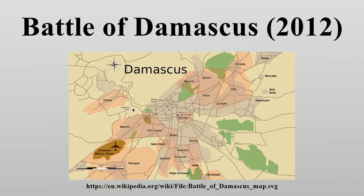It is unclear who started the battle. Thousands of rebels infiltrated Damascus from the surrounding countryside. Following this, according to some reports, the opposition forces launched an operation to capture the capital.